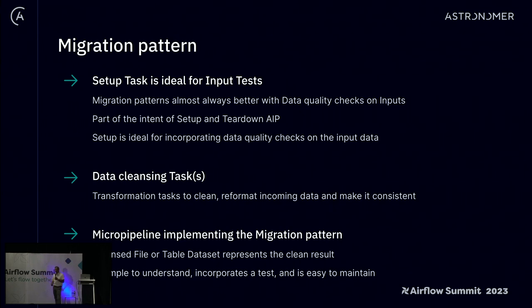That is almost a standard practice, but we'd actually like to urge incorporating an input data quality check as part of a setup task going forward. The DAG structure for a migration pattern would look like: a data quality check on the input, then typically a transformation or cleansing as the core task within the DAG, and then it creates a clean dataset for further processing. There's a micropipeline implementing the migration pattern whose sole responsibility is to cleanse the input data.